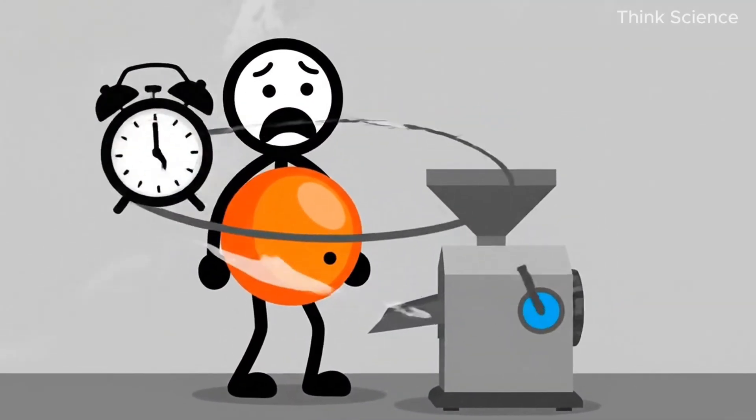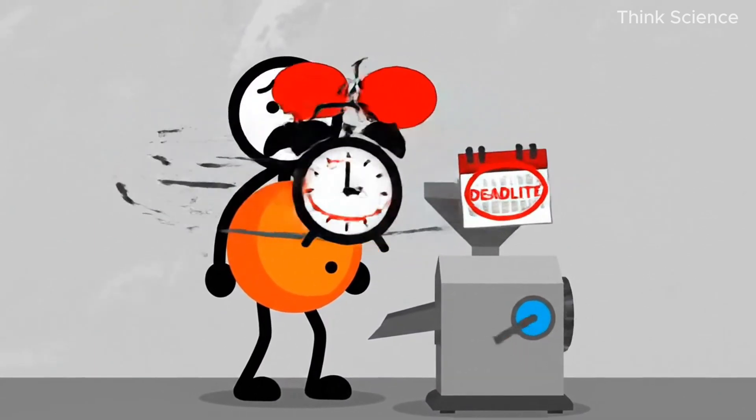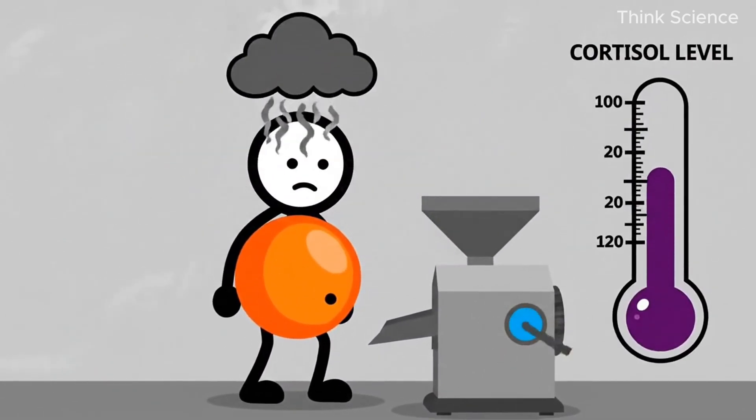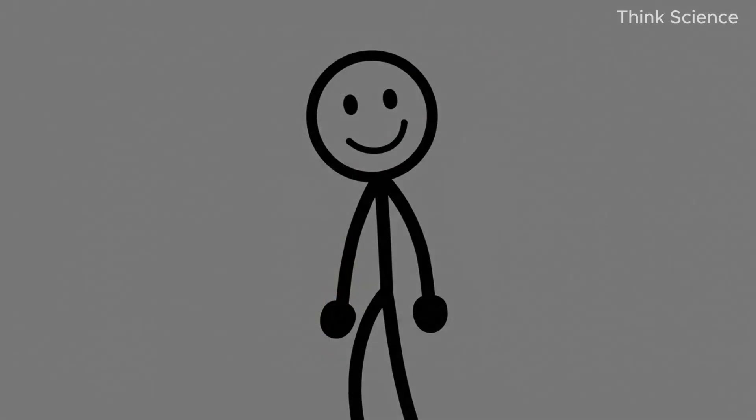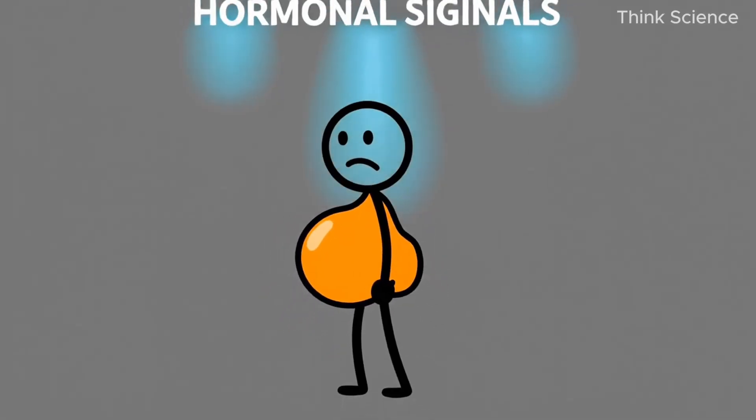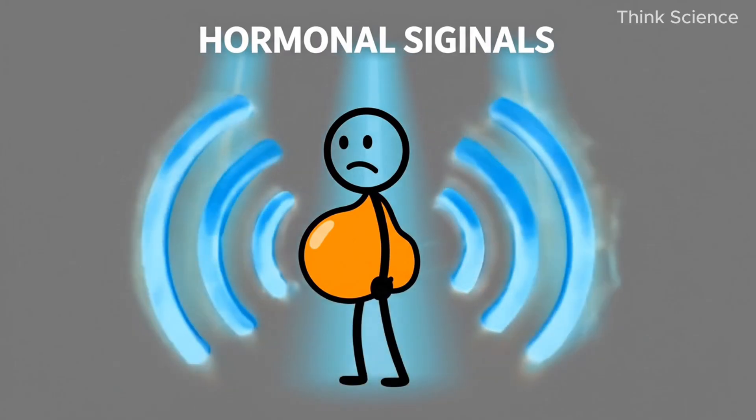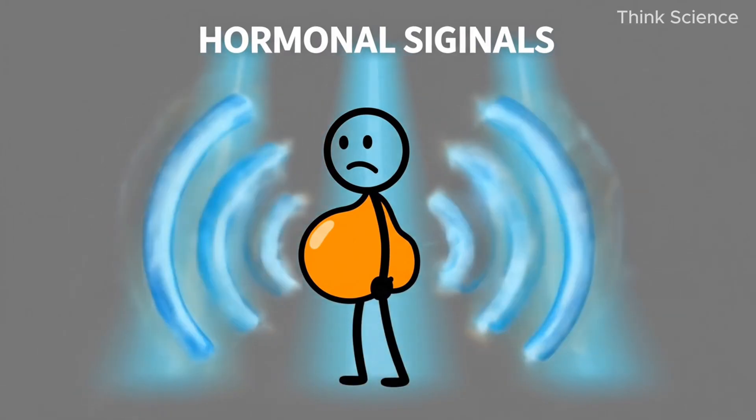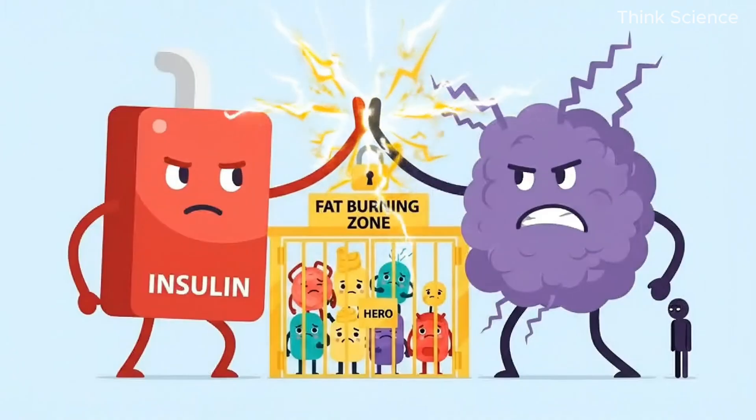Stress, lack of sleep, deadlines, arguments, overthinking all push cortisol higher. That's why people under chronic stress often have a round belly, thinner legs, and sometimes even fat on the upper back. It's not just fat, it's hormonal signaling. And here's where things get worse.